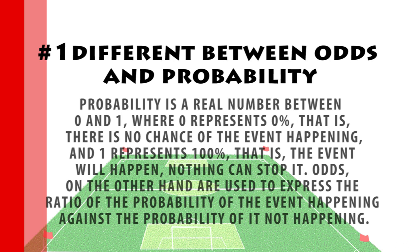Probability is a real number between 0 and 1, where 0 represents 0% — there is no chance of that event happening — and 1 represents 100%, meaning the match, the game, or the event will happen. Odds, on the other hand, are used to express the ratio of the probability of the event happening against the probability of it not happening.